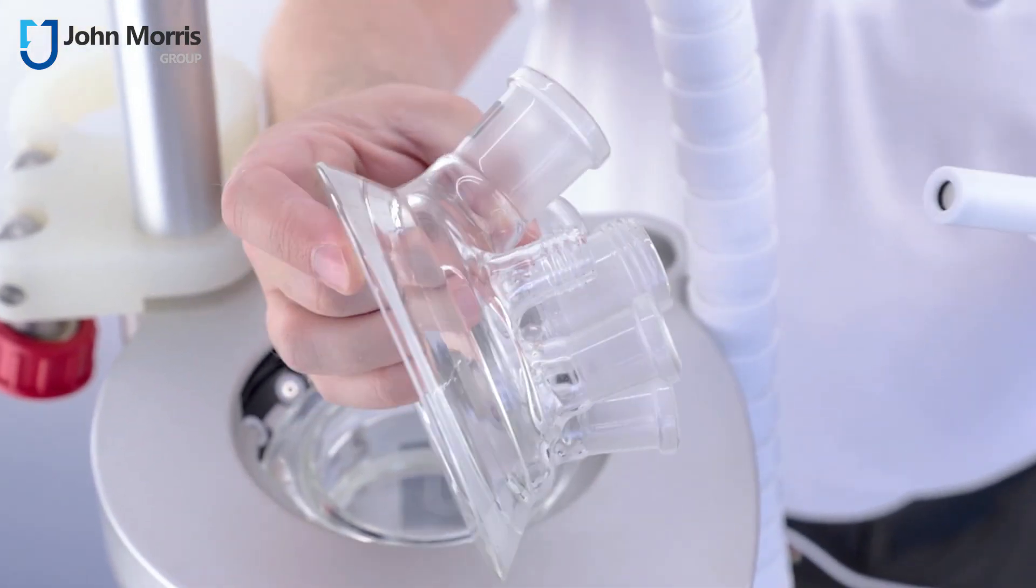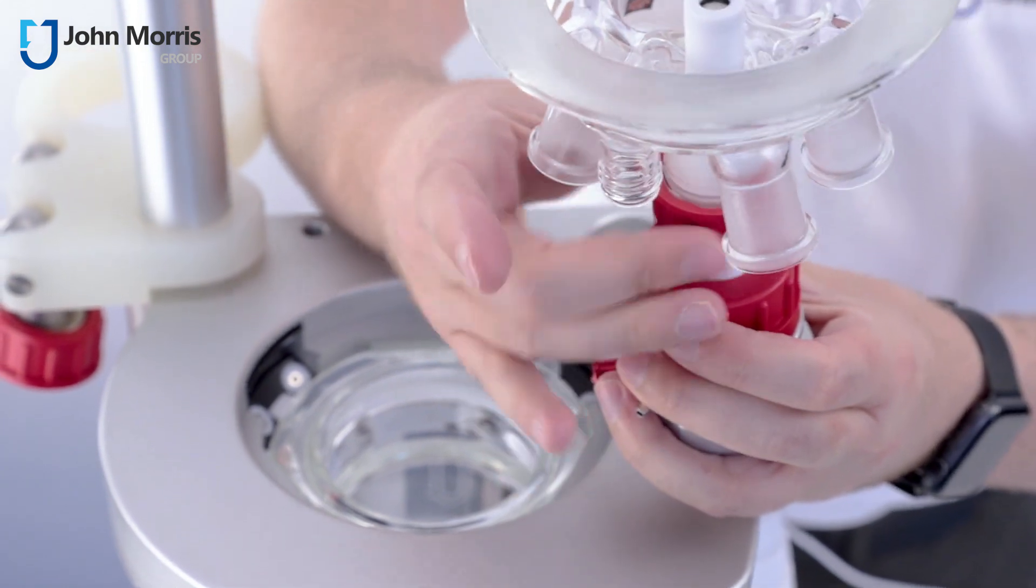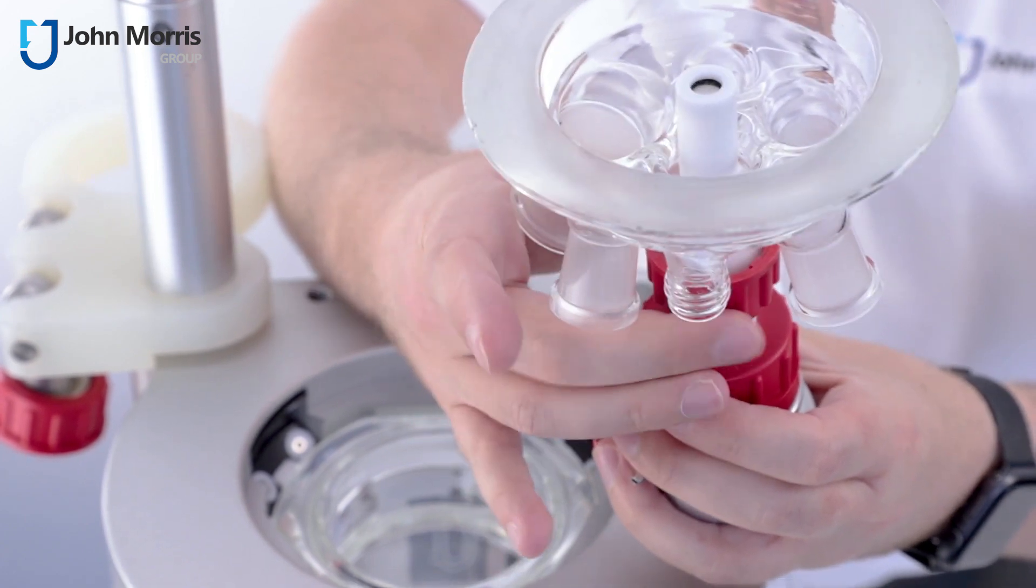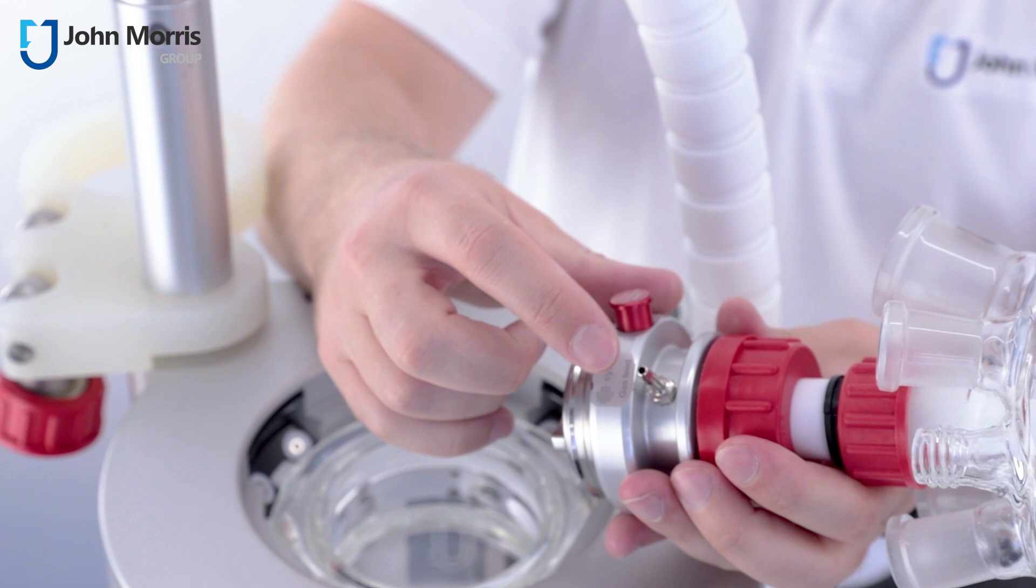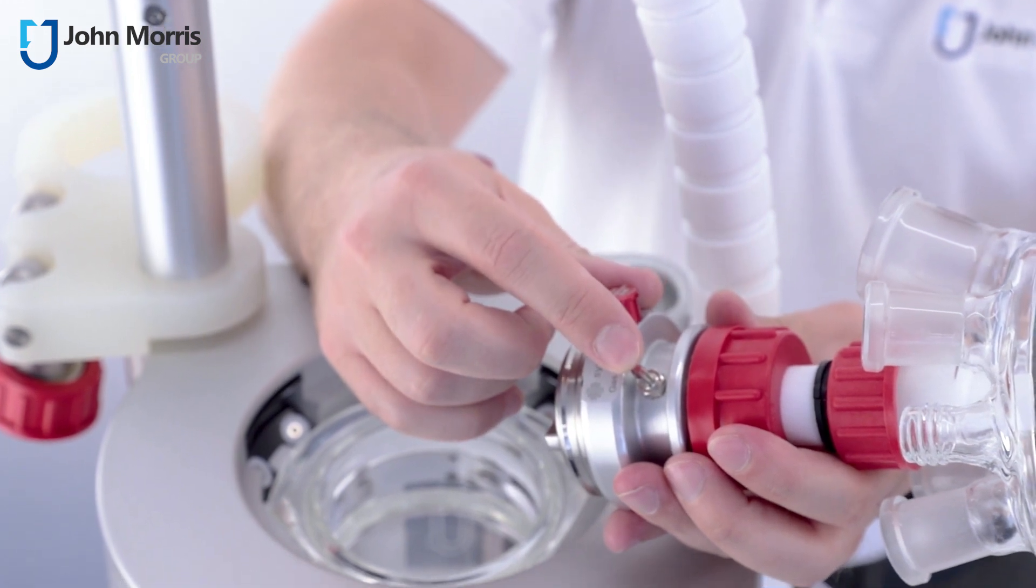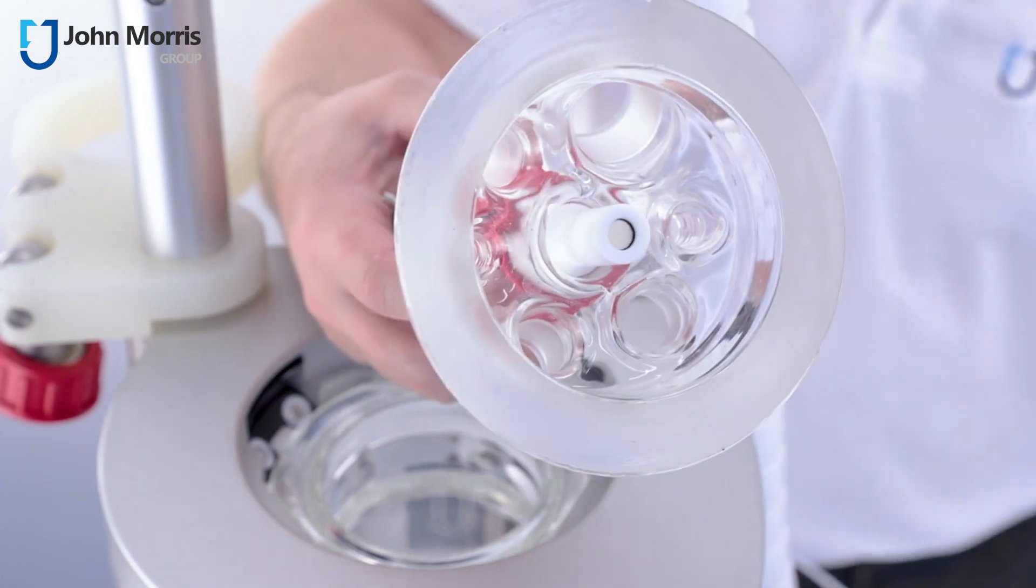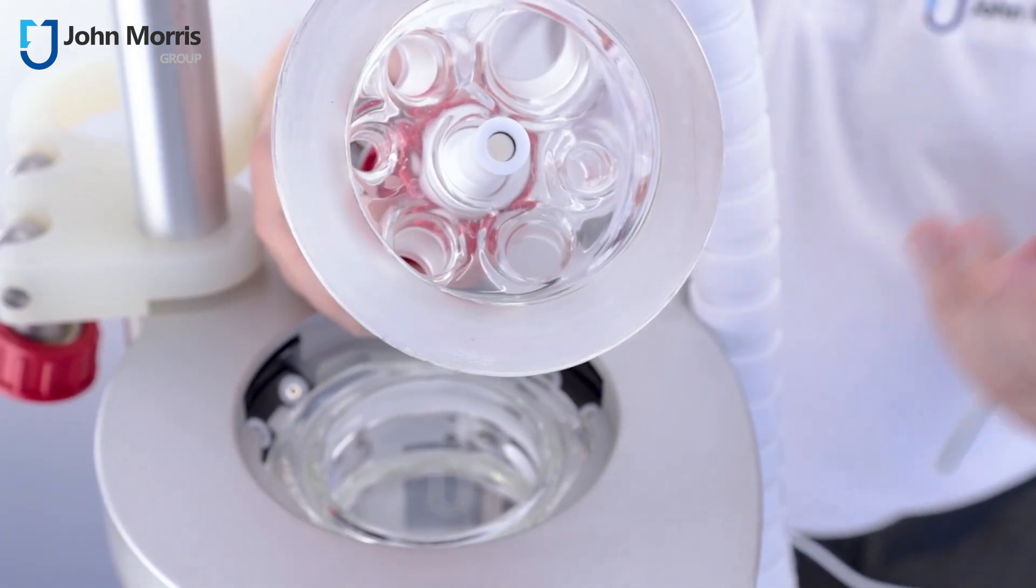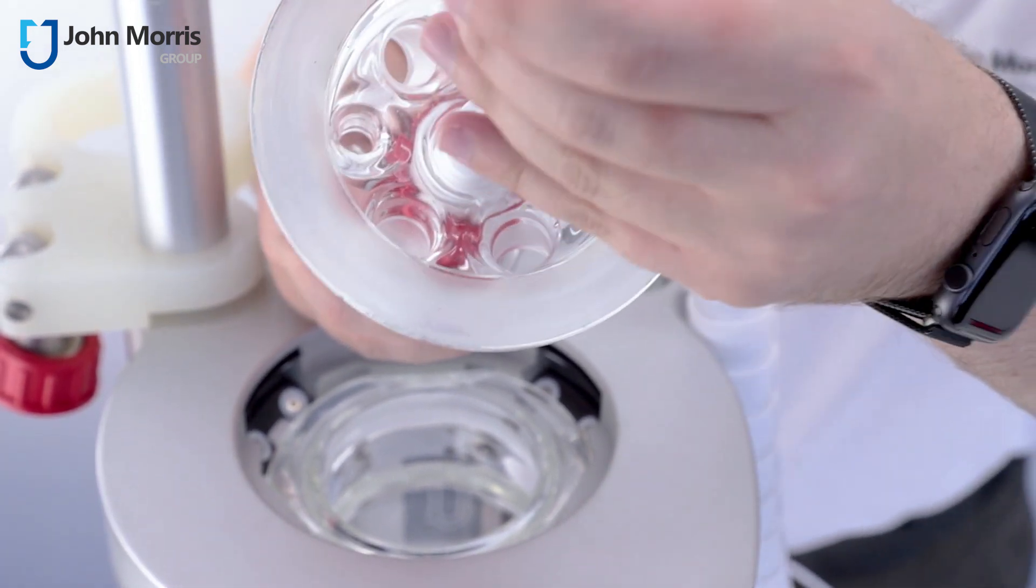To connect the stirrer to the vessel, slot it in like this and tighten it like so. You'll notice there's a port right here in case we want to put in inert gas, and to connect the stirrer at the end of it there are a range of different kinds of blades straight through.